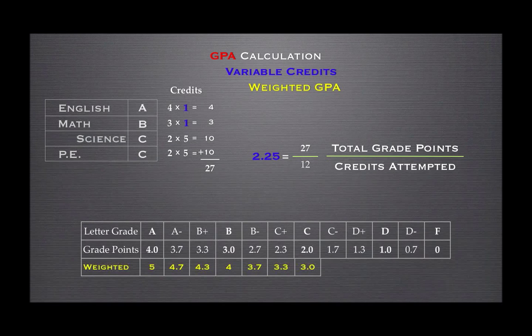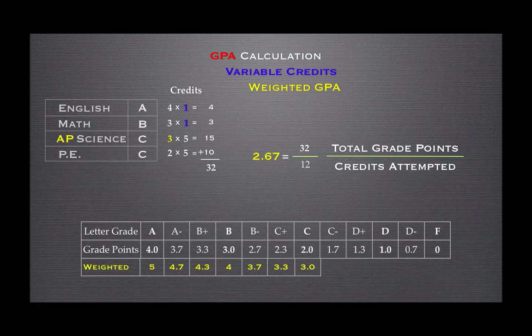Let's look at our example again. Say that the science course was an AP science. Instead of rating the C as a 2, this course will earn an extra grade point, making it 3 grade points. The calculation is the same — we now have a new total grade points of 32. The total number of credits attempted remains 12. Our new weighted GPA is 2.67. This concludes the GPA calculation for variable credits and weighted GPA.